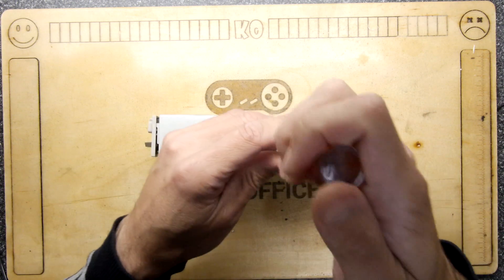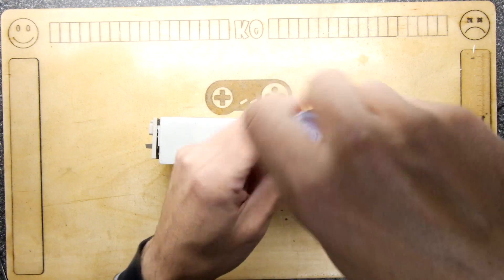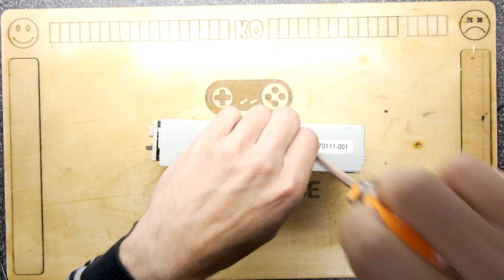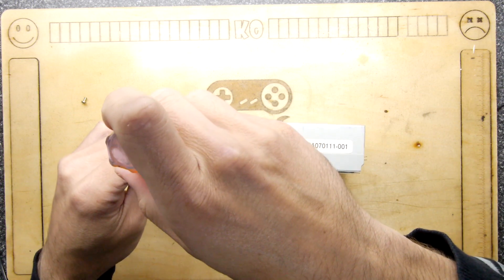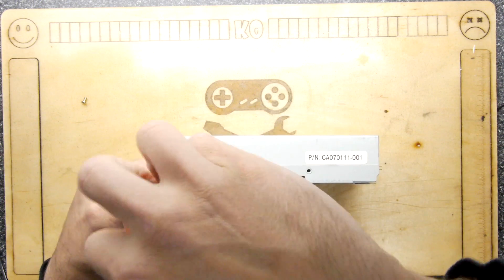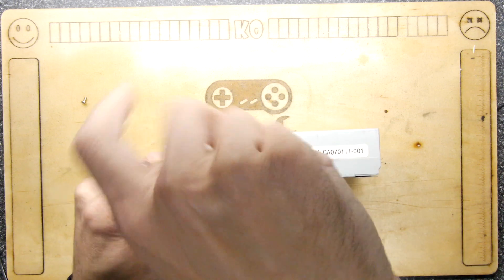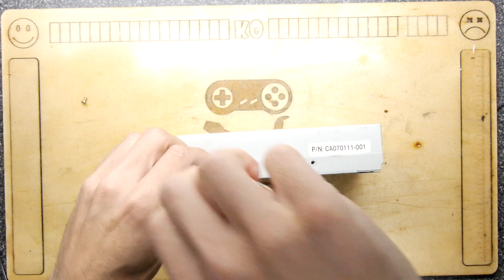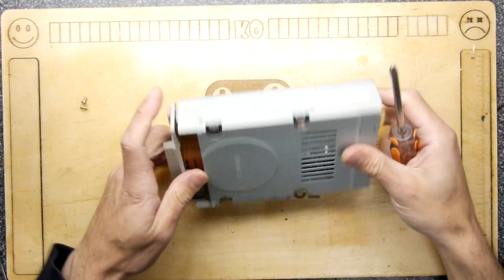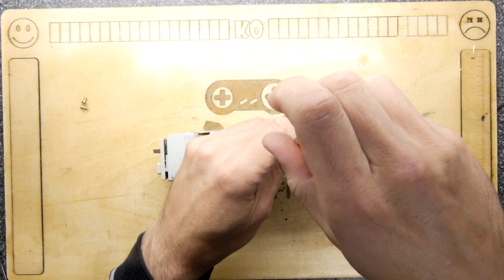So part number CA70111001. I don't think you're going to learn much from that part number. I'm pretty sure you can't go and buy one off a shelf. I did hear that some of these drives have belts so it's always good to have a quick look inside because if it has a belt we might want to wang a new one on.